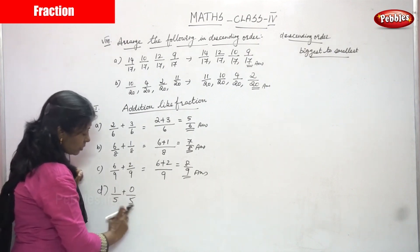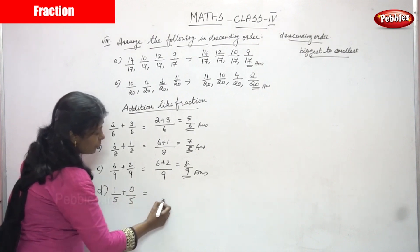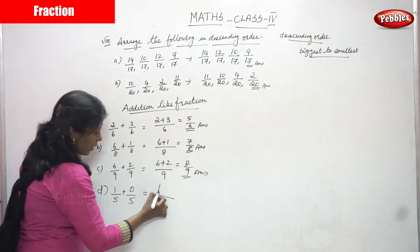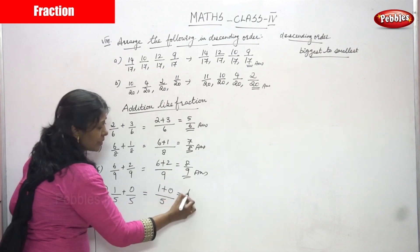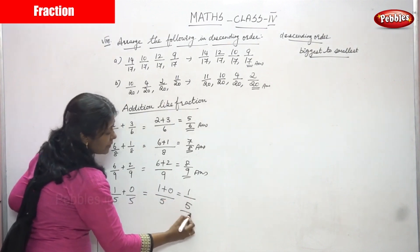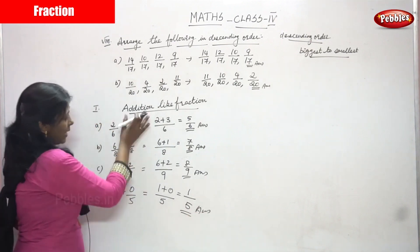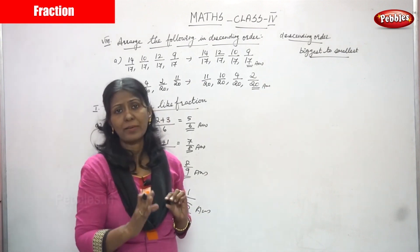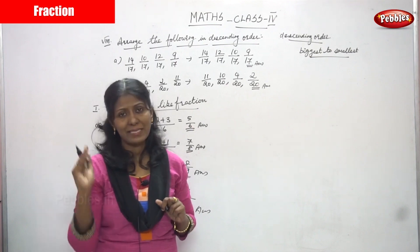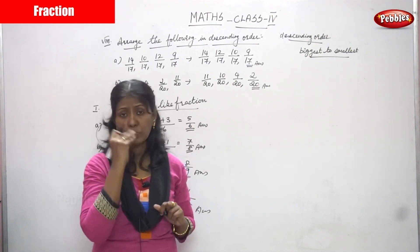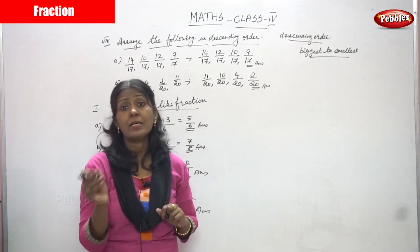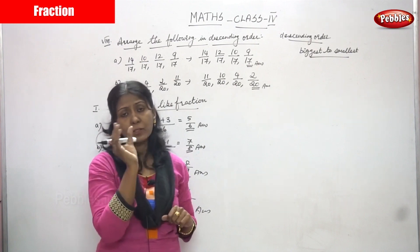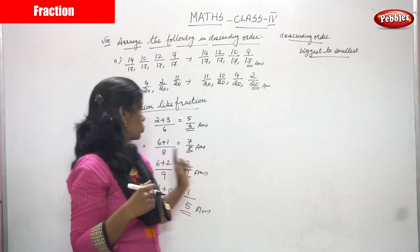Next: 1 by 5 plus 0 by 5 — in both fractions the denominators are the same, so write the denominator one time and add the numerators: 1 plus 0 equals 1, so the answer is 1 by 5. For addition of like fractions, first check the denominator — if denominators are the same it is a like fraction. Then add the numerators, write the denominator only one time, and that gives your final answer.